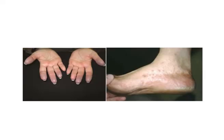Washer woman's hands and feet are seen after 48 to 72 hours, where the skin of the palms and soles becomes bleached, wrinkled, and sodden if the body remains submerged for that period.